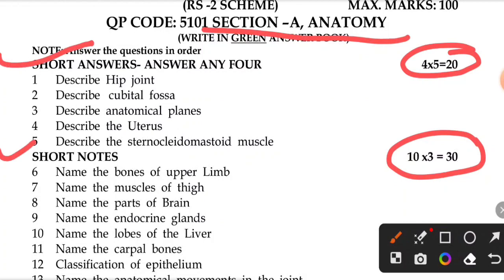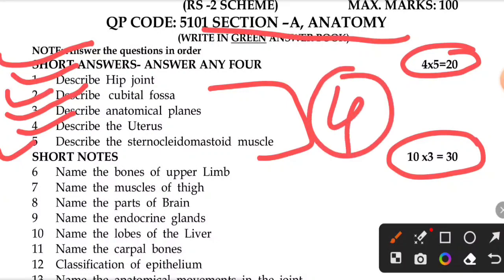In short answers, describe the hip joint, describe the cubital fossa, describe the anatomical planes, describe the uterus, and describe the sternocleidomastoid muscle. Total 5 short answers, 4 marks each.